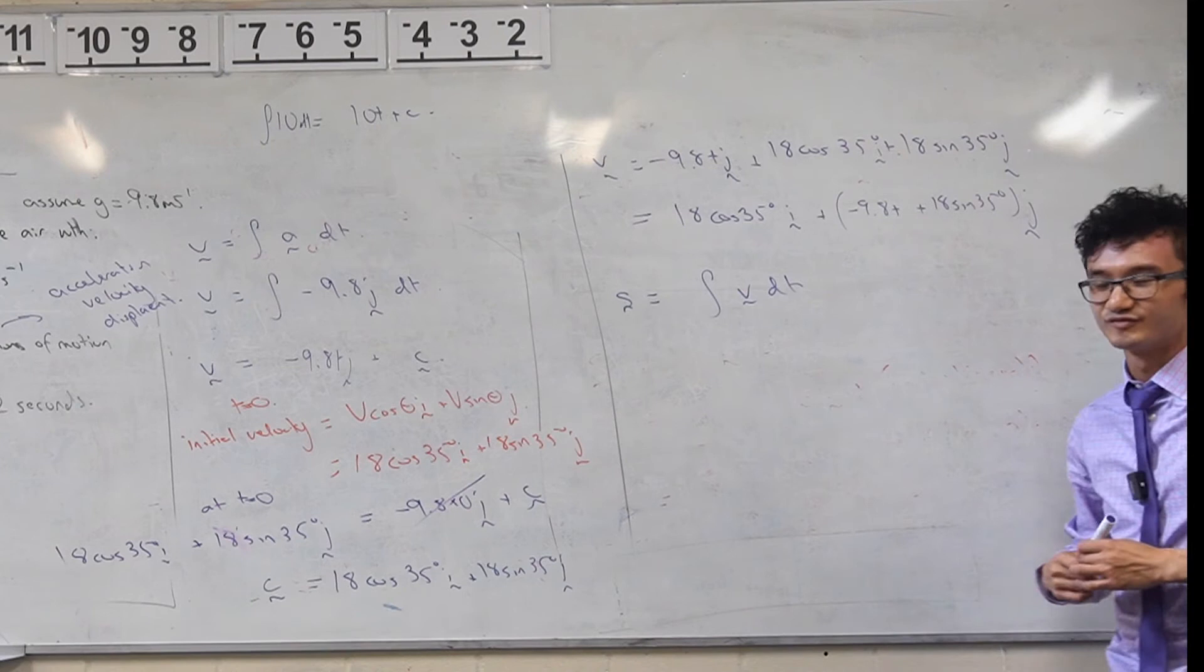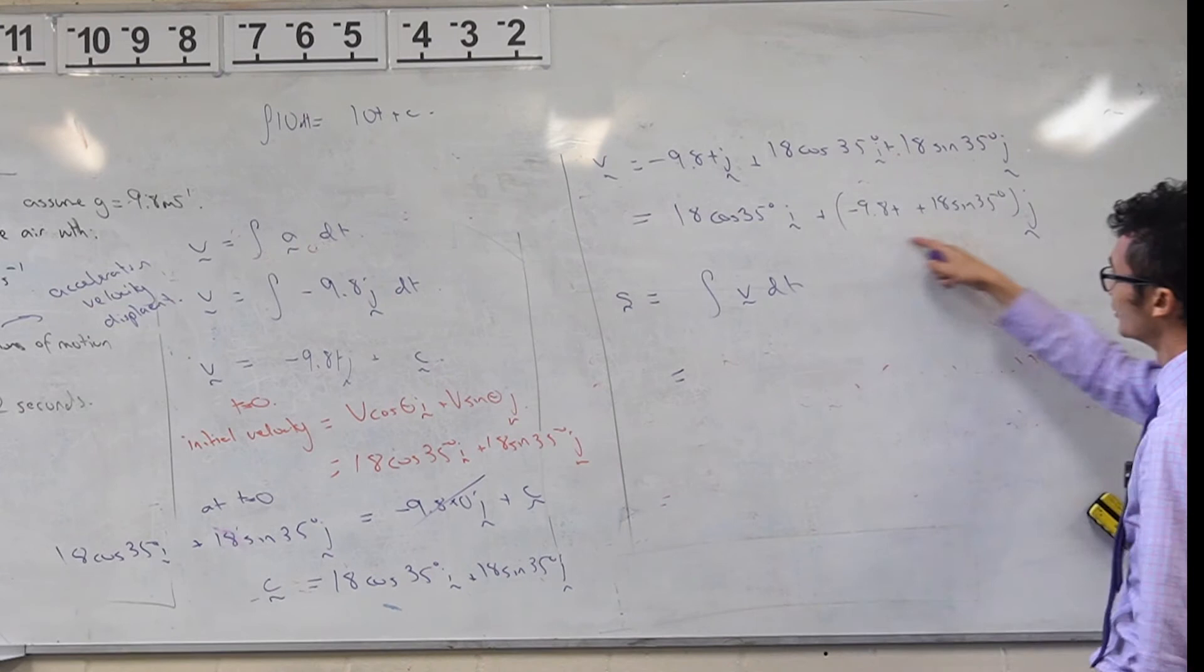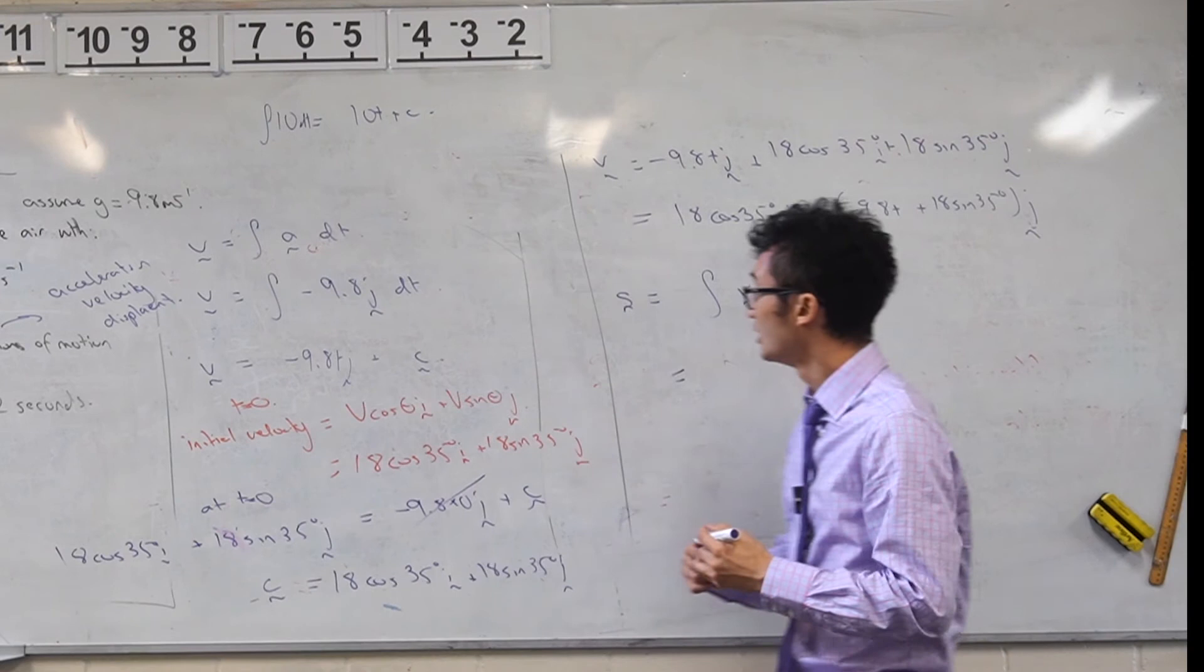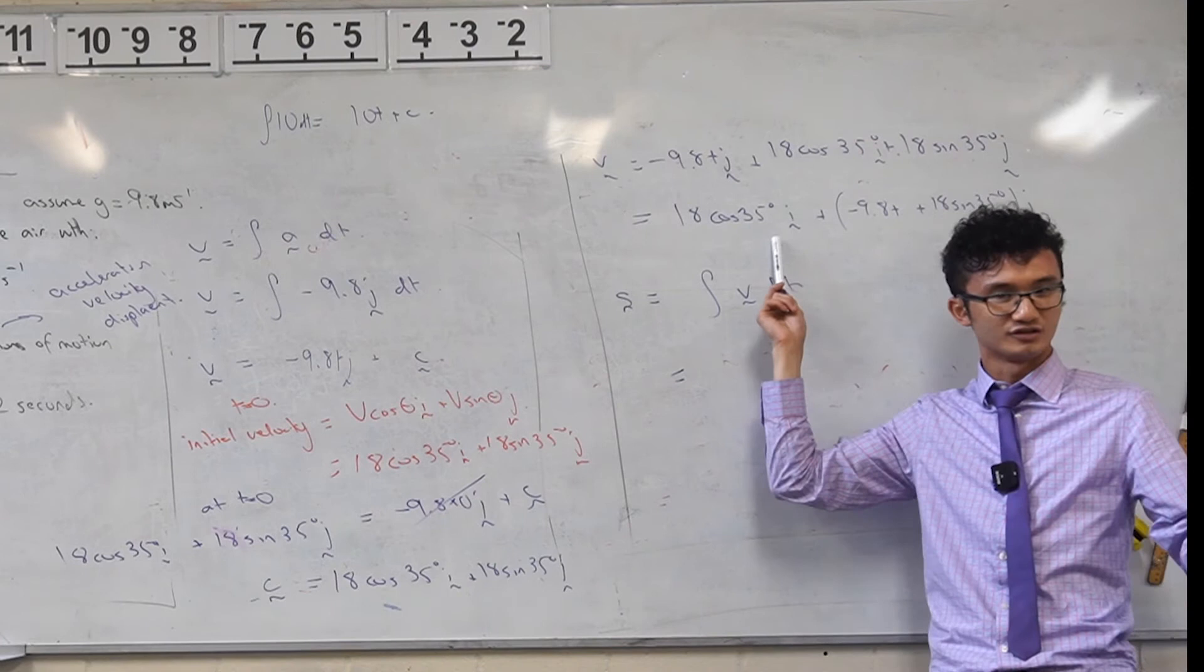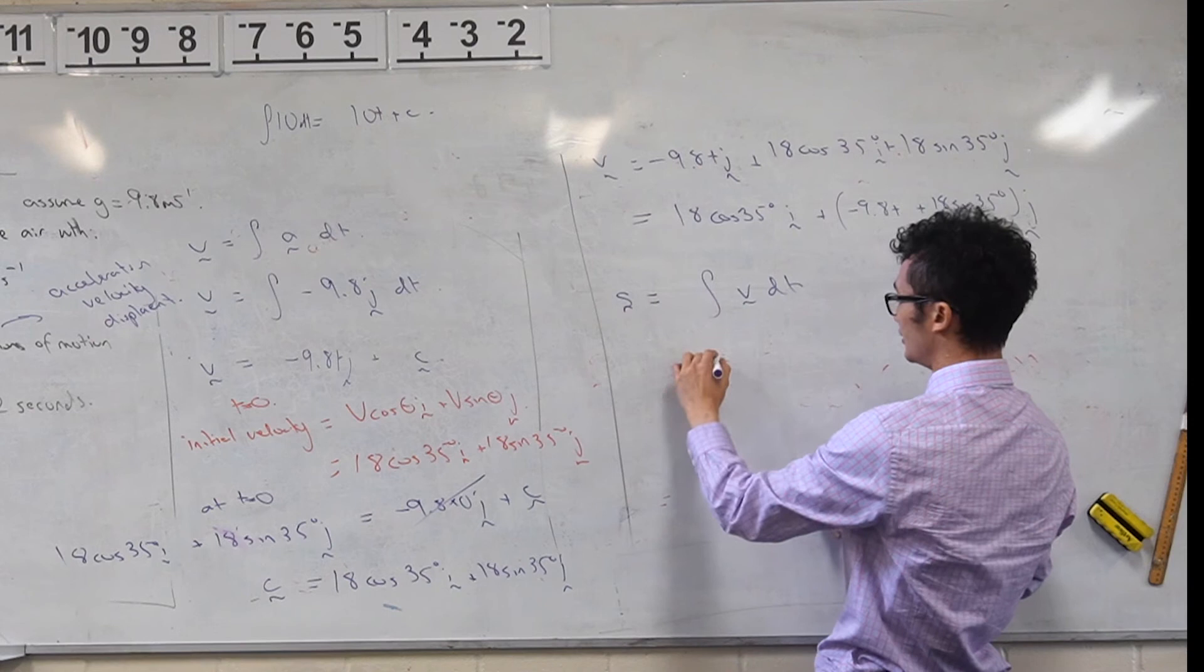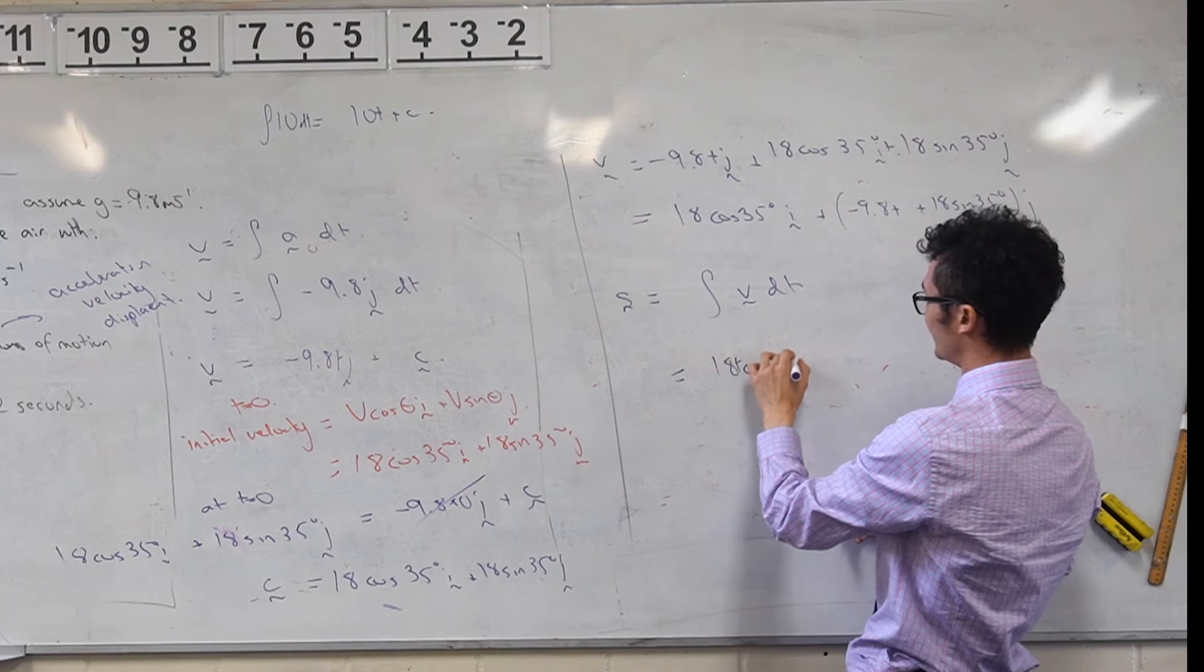How do you integrate like this kind of vector form over here? Well, it's the same idea as we did over here. Basically, I'm going to look at these, I'm going to say, okay, if there's a t variable here, then I have to treat that as a variable and integrate normally. But if I want to, if I just have something like this, 18 cos 35, like that's actually just a number. So what I can do is I can say, well, the integral of this would be equal to 18t cos 35 i.